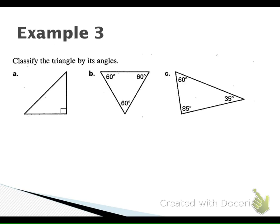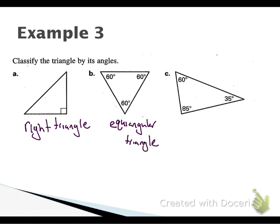Our first one up — what are we going to classify it by if we are classifying it by angles? It is a right triangle because it has a right-angle box. Our next one up — we have three equal angles, so we call it equiangular. And then our last one — do you have an angle bigger than 90 degrees? Nope, it's going to be acute. All less than 90 degrees, so it's an acute triangle.